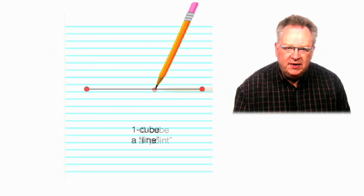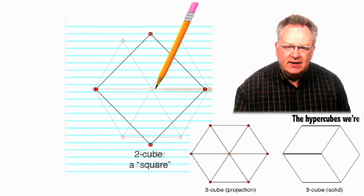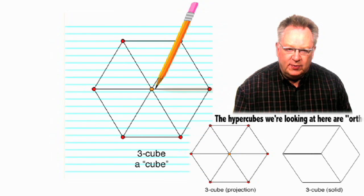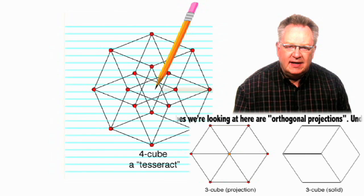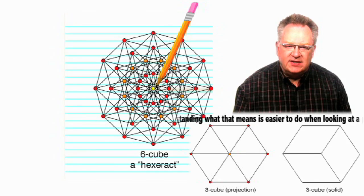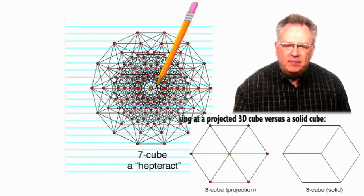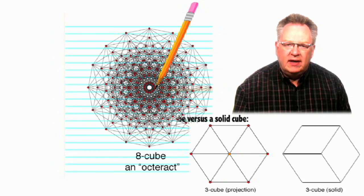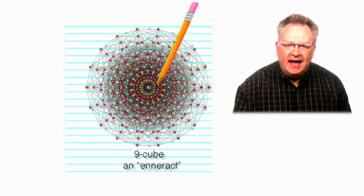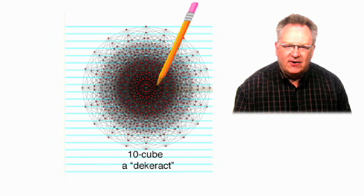Zero cube, a point. One cube, a line. Two cube, a square. Three cube, a cube. Four cube, a tesseract. Five cube, a pentaract. Six cube, a hexaract. Seven cube, a heptaract. Eight cube, an octaract. Nine cube, an enteract. And ten cube, a decoract.